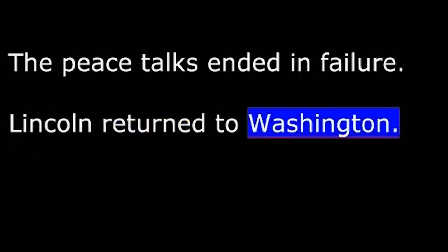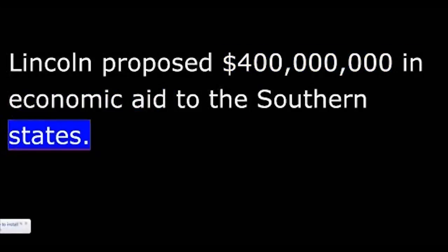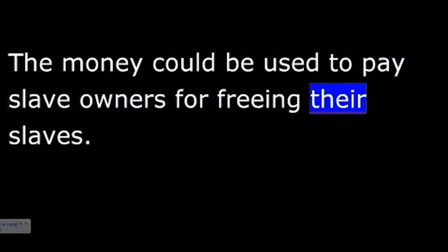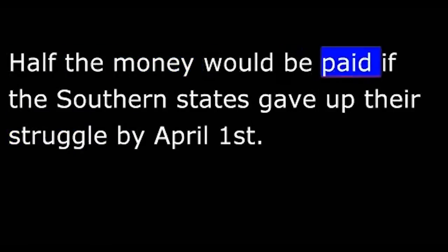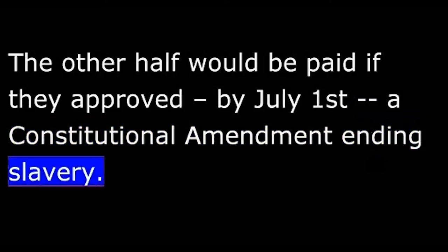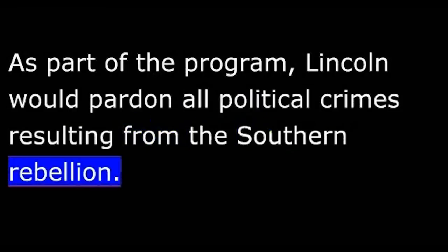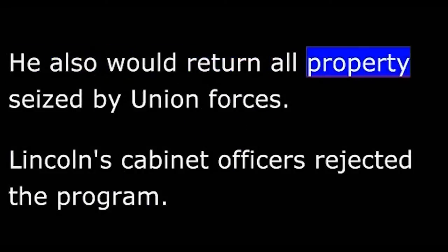Lincoln returned to Washington and prepared a message he wished to send to Congress. It contained a program he felt could end the war within a few weeks. Lincoln proposed $400 million in economic aid to the Southern states. The money could be used to pay slave owners for freeing their slaves. Half the money would be paid if the Southern states gave up their struggle by April 1st, and the other half if they approved, by July 1st, a constitutional amendment ending slavery. As part of the program, Lincoln would pardon all political crimes resulting from the Southern rebellion, and return all property seized by Union forces.